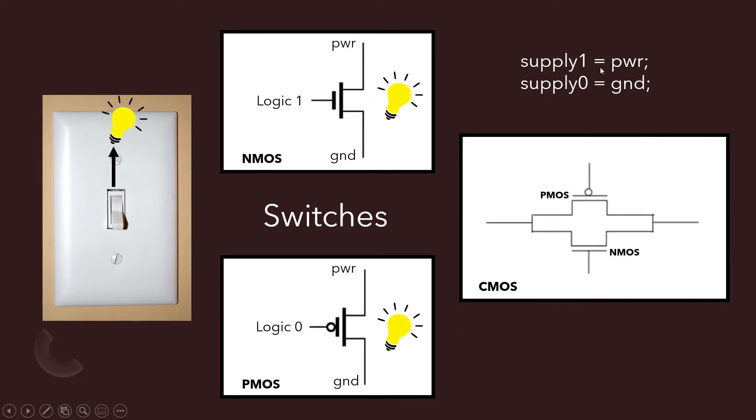And then this is the Verilog code up here for the supply. So when you're using these switches, you have to give it a driver. Supply one is a logic high and supply zero is logic low. So we give logic high to power and logic low to ground.